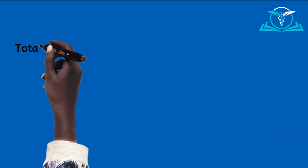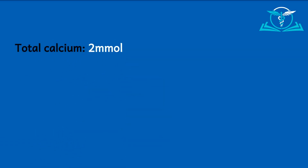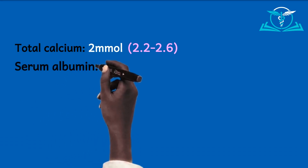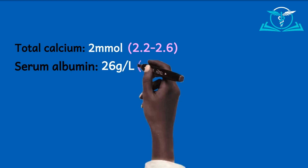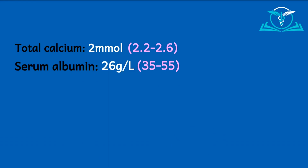Let's see an example. Take a patient with a total serum calcium concentration of 2.2 millimoles per liter, with a reference range of 2.2 to 2.6. By definition, this patient has a total serum calcium less than 2.2, so we think he is hypocalcemic. But remember, you cannot conclude on this by ignoring the serum albumin level. We check the serum albumin level and it is 26 grams per liter, with the normal being between 35 to 55. So we have to calculate the corrected calcium level.